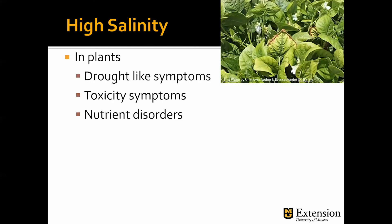Now let's move on to high salinity. High salinity affects both the crop and the physical structure of the soil. In plants, high salinity will affect crop performance and you'll notice that the plants will show drought-like symptoms even after watering. Toxicity symptoms — such as the one shown in the picture in the top right corner — show that the edges of the leaves have a burnt appearance, along with nutrient disorders in the plants.